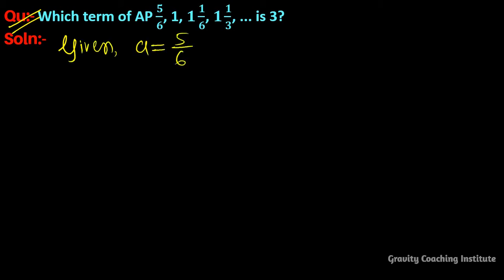And d is equal to a₂ minus a₁, so 1 minus 5/6, so 6 minus 5 equal to 1/6. And aₙ is given as 3, and we know that the formula of aₙ is equal to a plus (n-1)d.